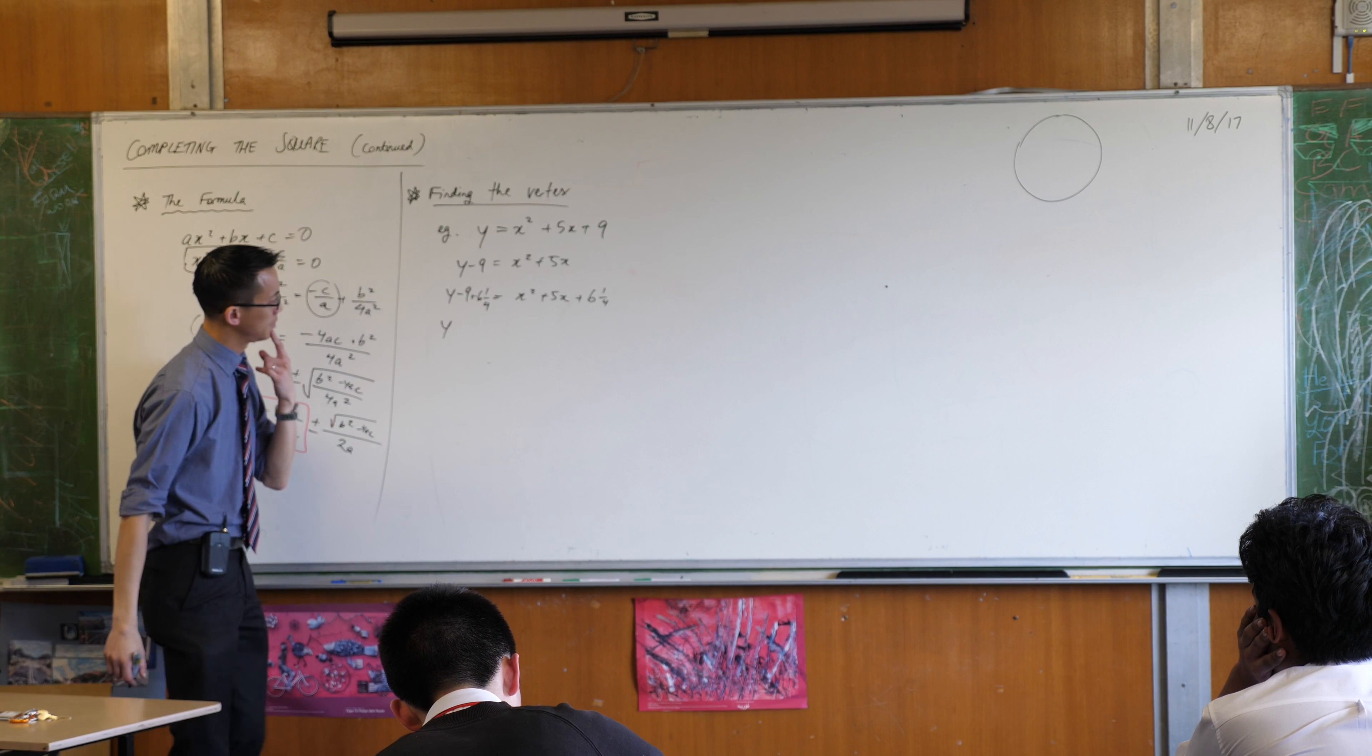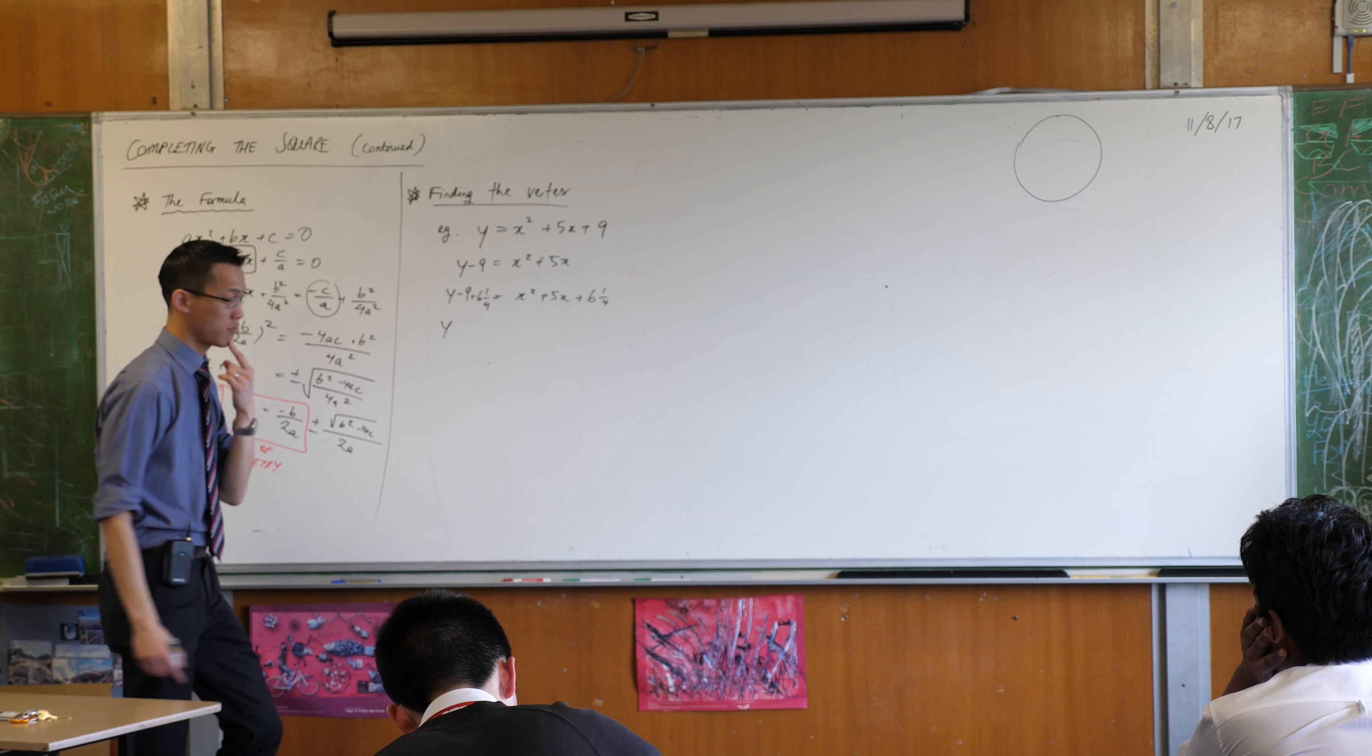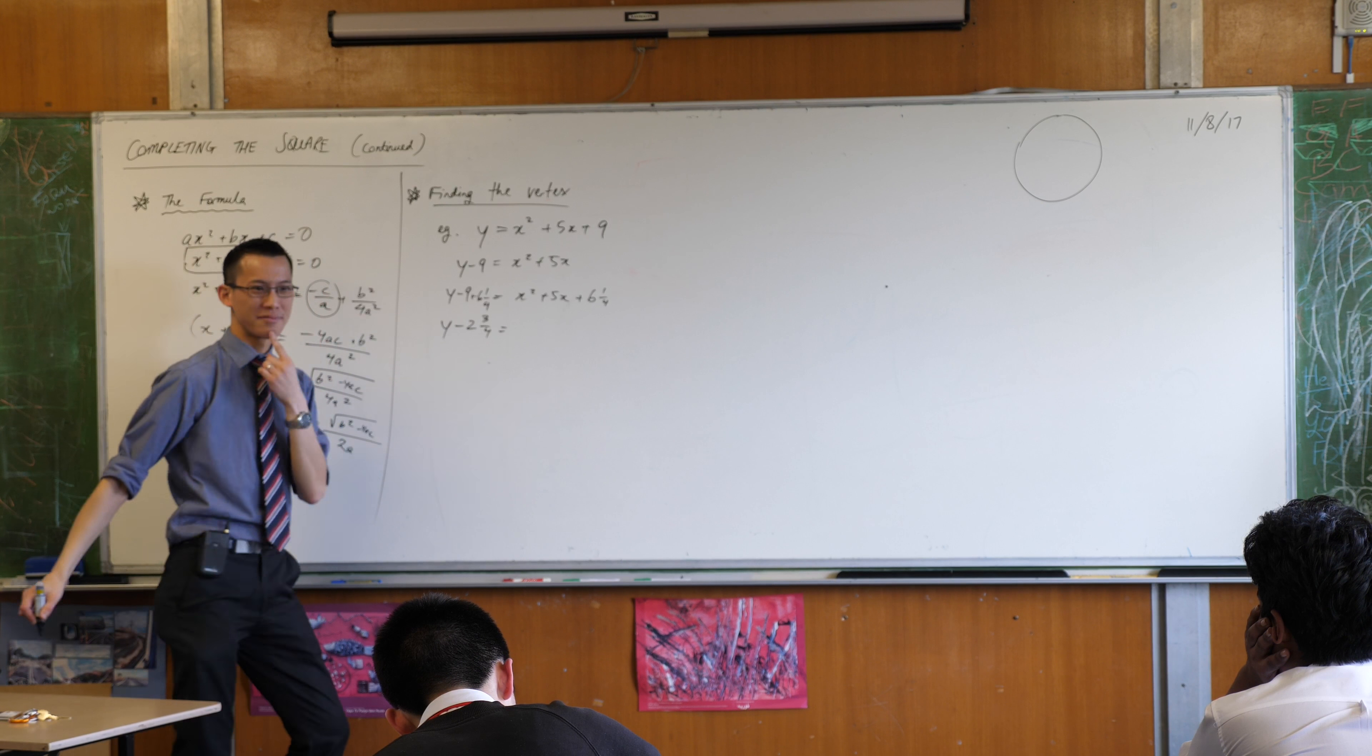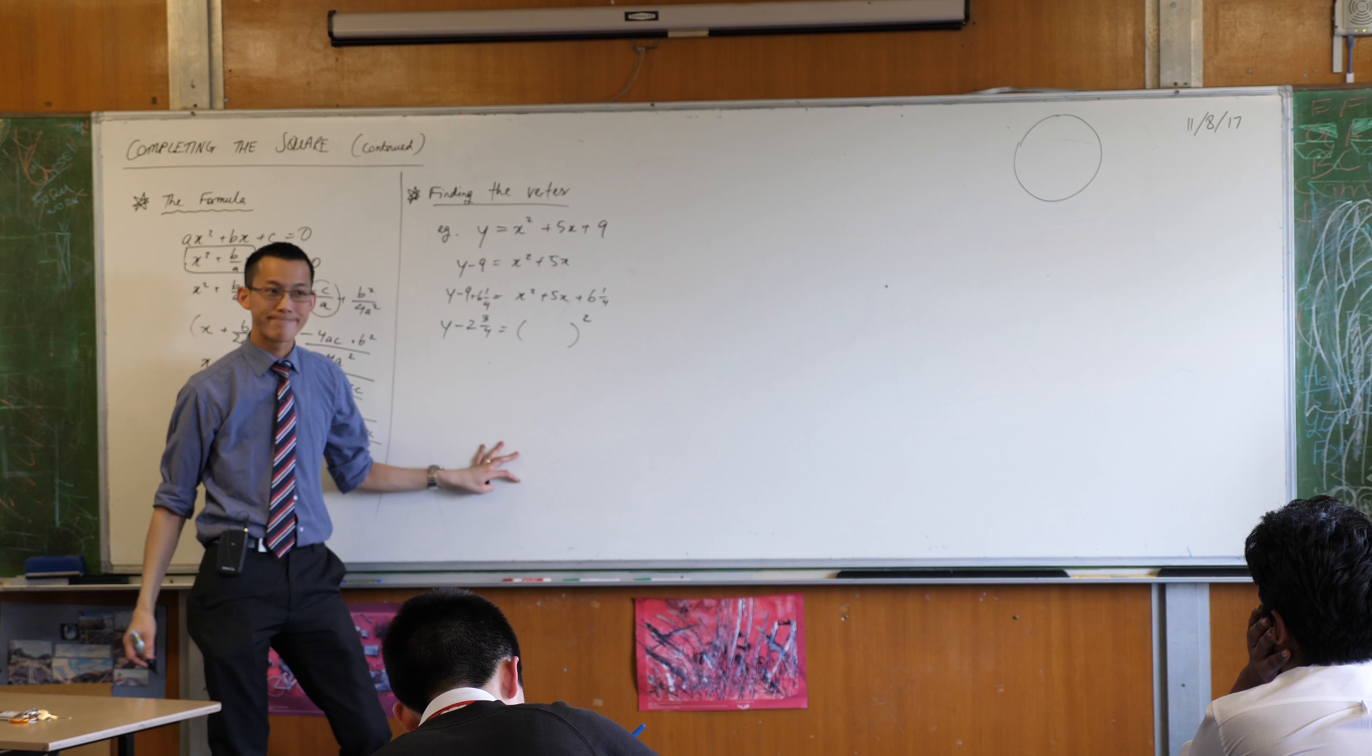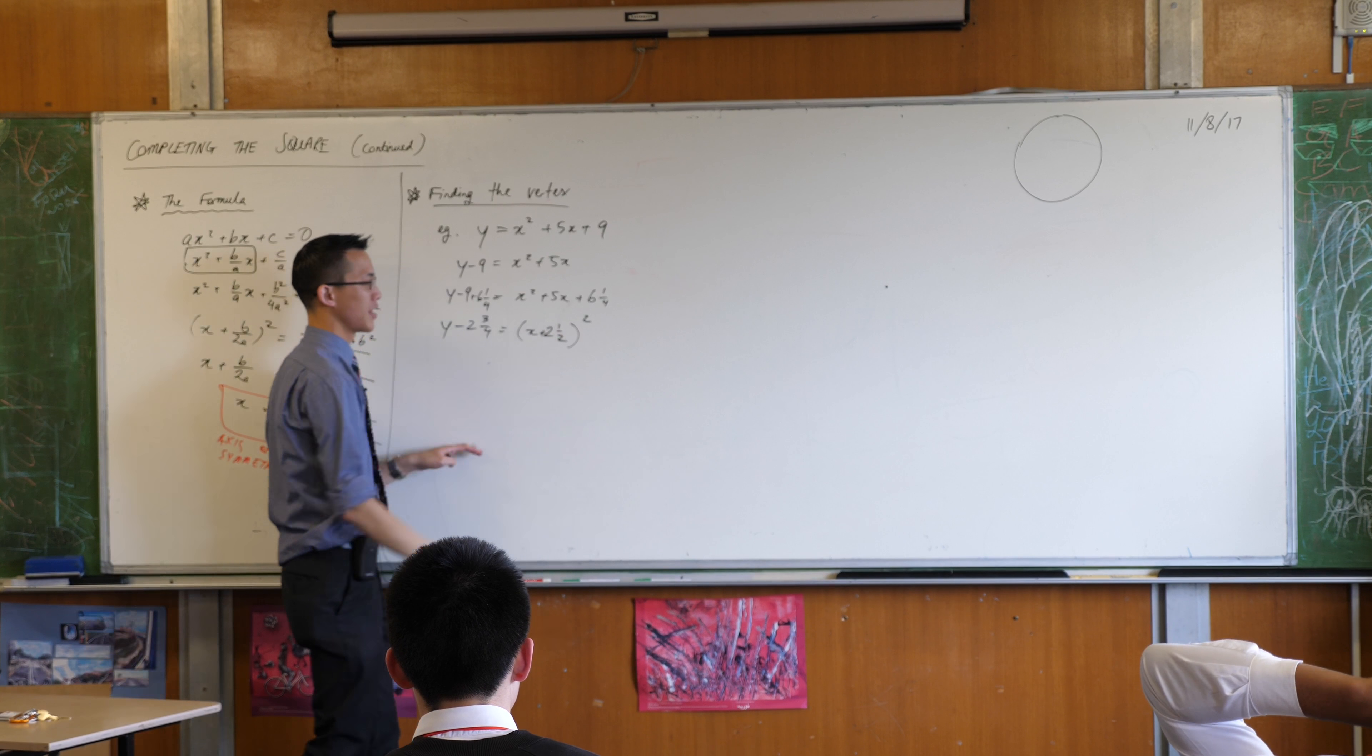And now I can factorize. Let's tidy this guy up. 6.25 minus 9 is 2.75. Like so. The right hand side is now a square because I completed it. What's it the square of?